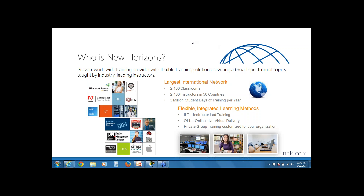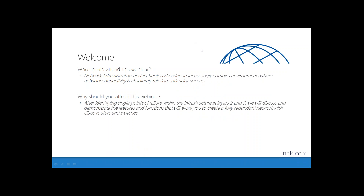Our audience today likely consists of network admins and technology leaders that find themselves in increasingly complex environments where network connectivity is considered absolutely mission critical for success. Today we're going to be identifying some single points of failure within our infrastructure at both layers 2 and 3, and discussing and demonstrating the features that will allow you to create a fully redundant fault-tolerant network with your Cisco routers and switches.